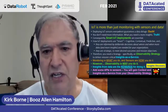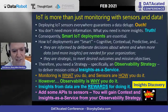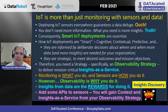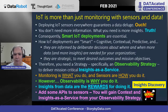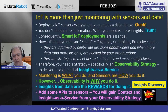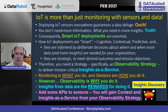Deploying sensors everywhere guarantees a data deluge — we don't necessarily need more data. In fact, we don't really need more information; what we need is more insights. That's the truth: what we need is more insights, not just more data and more bits. Consequently, our IoT deployments need to be smart.